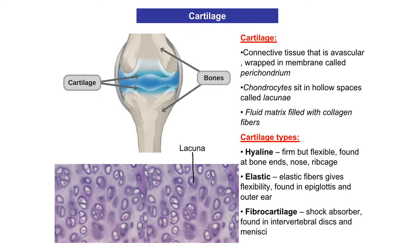Cartilage is an avascular connective tissue, meaning it lacks blood supply. It is wrapped in a membrane called the perichondrium — 'peri' means outside and 'chon' refers to cartilage. Within the perichondrium we find a vascular system, which carries blood vessels, so cartilage gets its nutrients from the perichondrium. The small holes you see within cartilage are called lacunae, meaning an unfilled space or gap. The surrounding purple substance is cartilage matrix, which is vital for its collagen and elastin fibers.